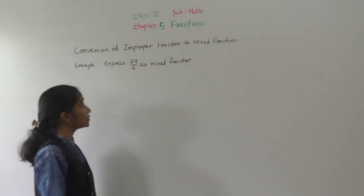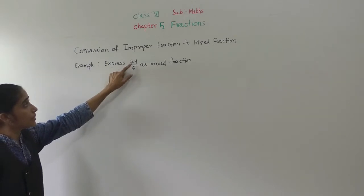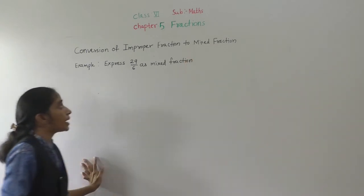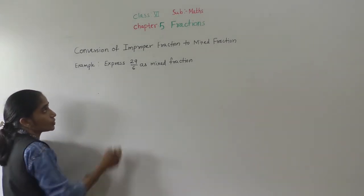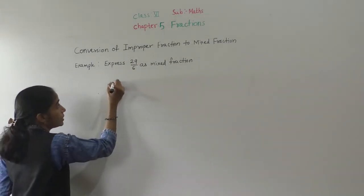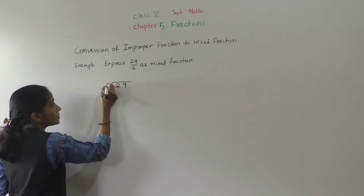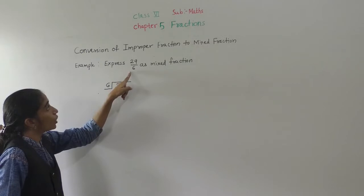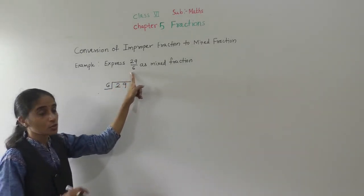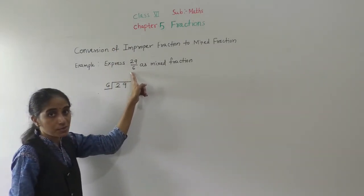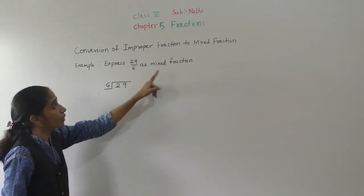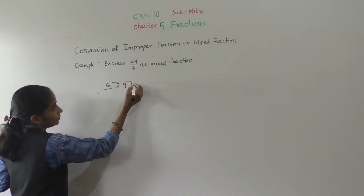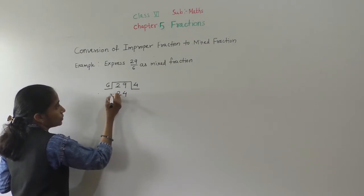Conversion of improper fraction to mixed fraction. Example: Express 29 upon 6 as a mixed fraction. 29 upon 6 means 29 divided by 6. 29 upon 6 is an improper fraction because its numerator is greater than the denominator. So we divide 29 by 6. 6 fours are 24.